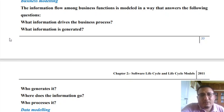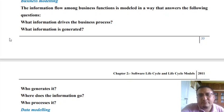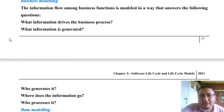To identify these objects, you should answer the following five questions: What information drives the business process? For example, in a library management system, the system is driven by books, users, and the library. What information is generated? Who generates the information? Where does the information go? And who processes it? If you seek answers to these five questions, you will be able to identify the various potential objects participating in realizing the business. Business modeling has a very important role to play.